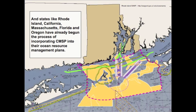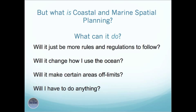States like Rhode Island, California, Massachusetts, Florida, and Oregon have already begun the process of incorporating CMSP into their ocean resource management plans. But what is Coastal and Marine Spatial Planning? What can it do? Will it just be more rules and regulations to follow? Will it change how I use the ocean? Will it make certain areas off limits? Will I have to do anything?